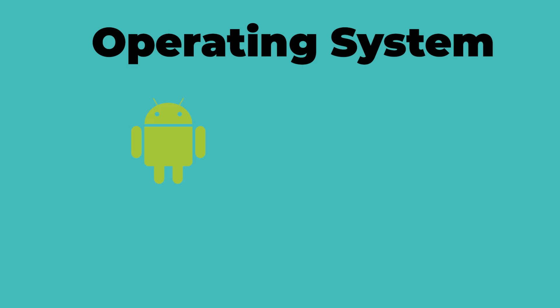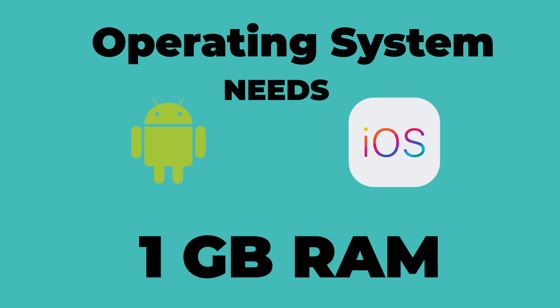Let's see what kind of application needs how much RAM to run. First, let's talk about the operating system. Your Android or iOS operating system needs 1GB of RAM to run the system. So if you are using a latest smartphone, then without installing any other app, you need at least 1GB RAM in your smartphone.